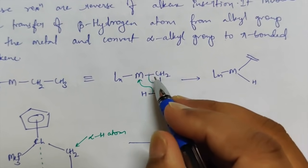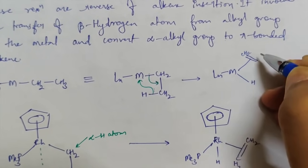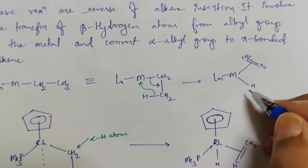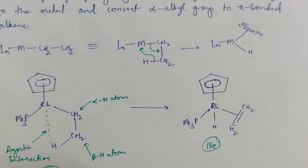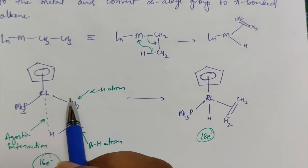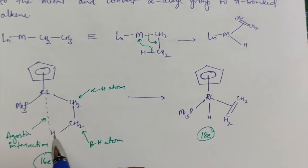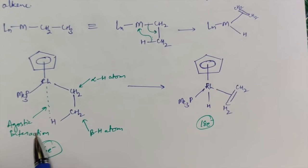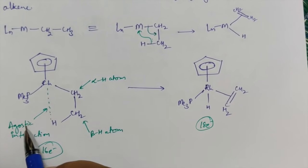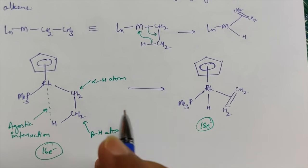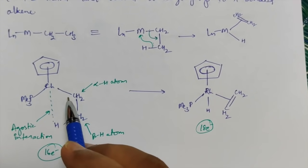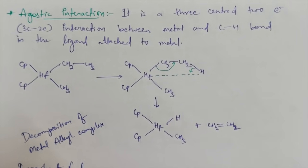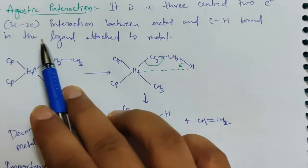If you have a metal attached to an ethyl ligand, the beta hydrogen coordinates to the metal and the bond shifts, forming a pi bond — the CH2=CH2 is now pi-coordinated and hydrogen has a direct sigma bond with the metal. Another example shows beta-hydride elimination occurring, and the interaction between the metal and the beta hydrogen before elimination is called an agostic interaction.